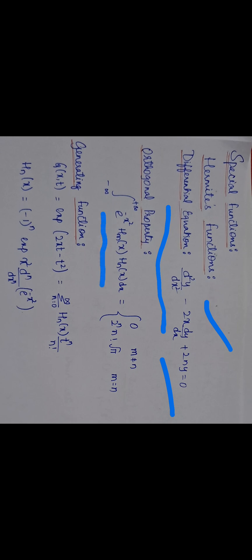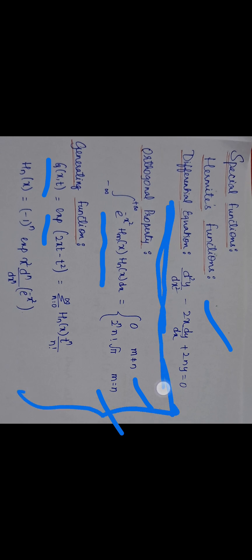Next, the orthogonal property: the integration from minus infinity to plus infinity of e^(−x²) H_m(x) H_n(x) dx equals 0 if m ≠ n, and equals 2^n · n! · √π if m = n. The generating function for Hermite's function is g(x,t) = exp(2xt − t²) = summation from n=0 to infinity of H_n(x) t^n divided by n!. Also, H_n(x) = (−1)^n · e^(x²) · d^n/dx^n [e^(−x²)]. These are the most important points of Hermite functions.